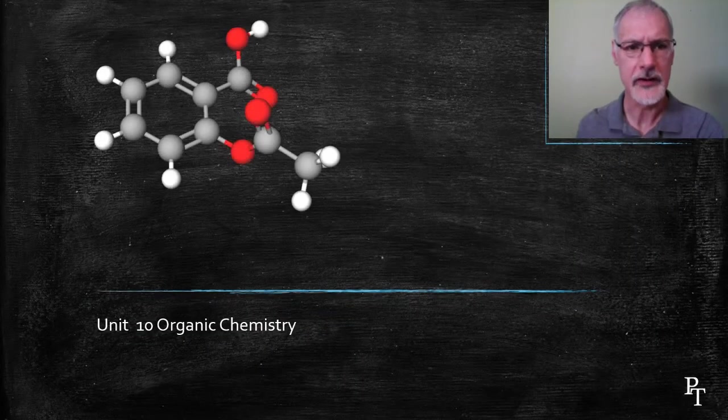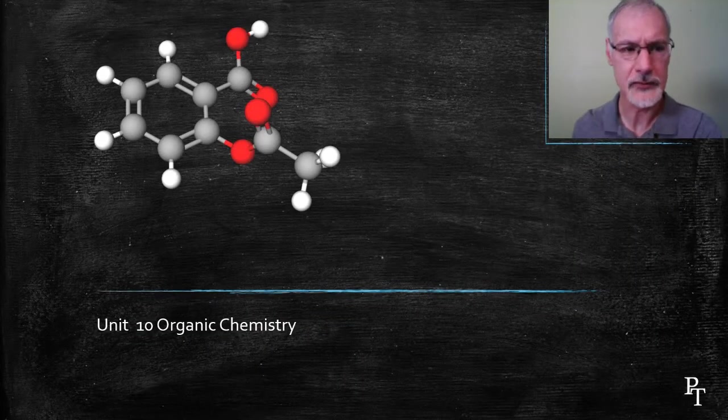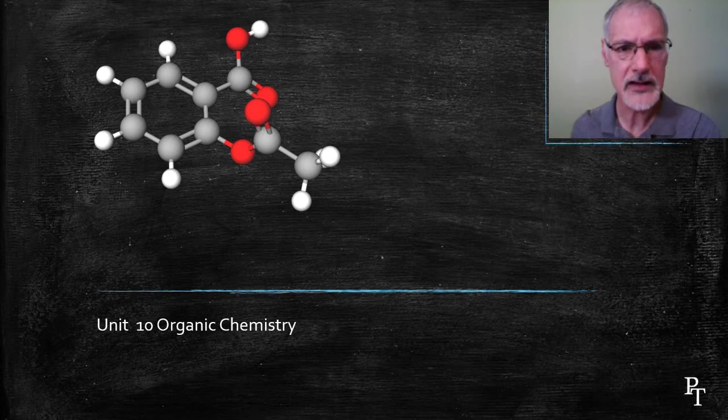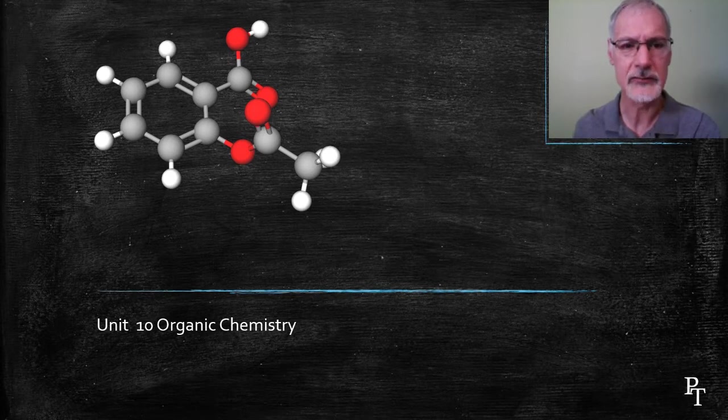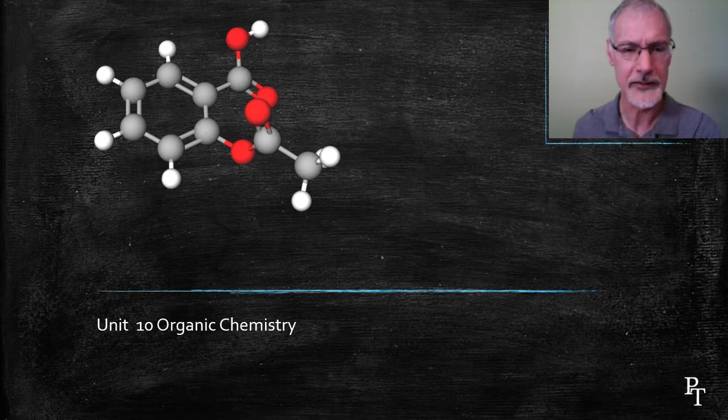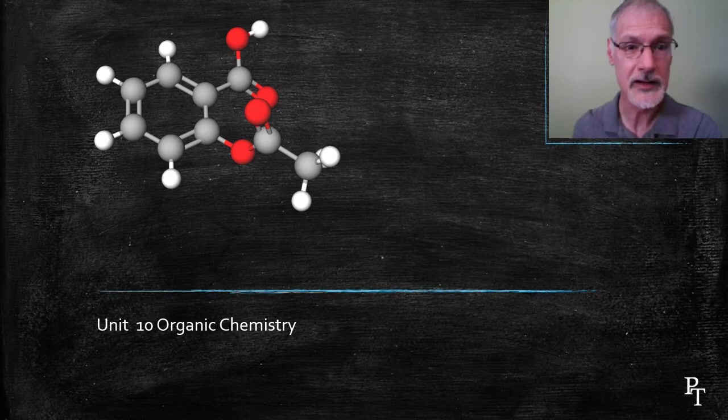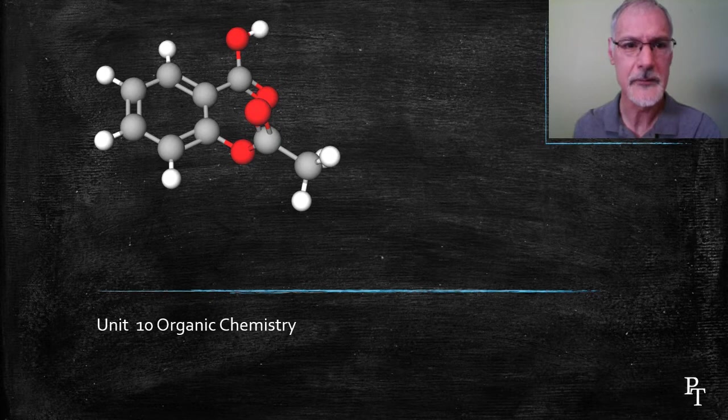Aspirin is but one of many compounds that are classified as aromatic hydrocarbons. The presence of that ring-like structure that you see on the left end of the molecule is a characteristic of aromatic hydrocarbons. The molecule shown here, acetylsalicylic acid, is also known as aspirin.